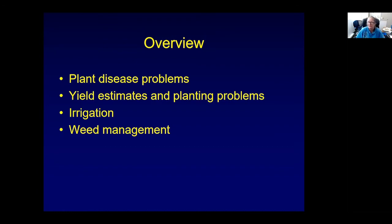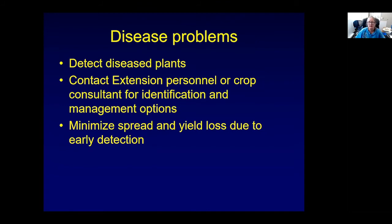Now I'll talk about specific examples of things you can do with the drone. You can detect diseased plants and then contact your extension personnel or crop consultant for identification and management options. This is especially useful if you don't have a lot of personnel to scout a field — you can fly the drone, see something unusual, go straight to those plants, collect a sample, get it identified, and minimize spread and yield loss because you've detected the problem earlier.